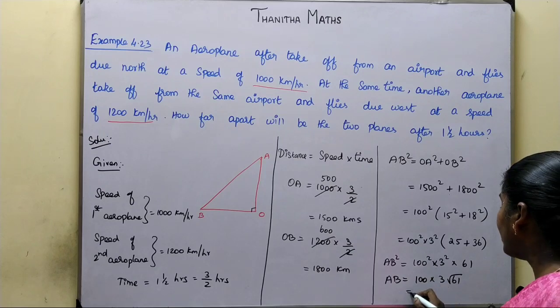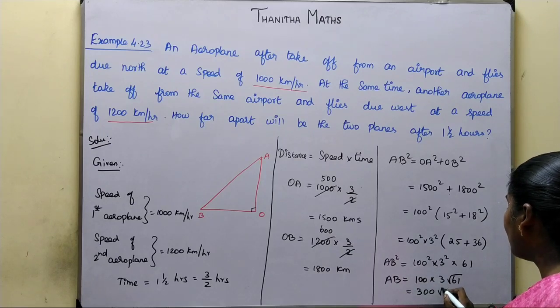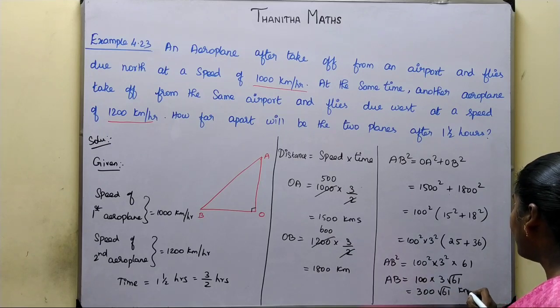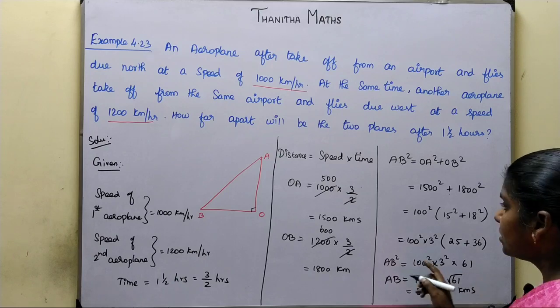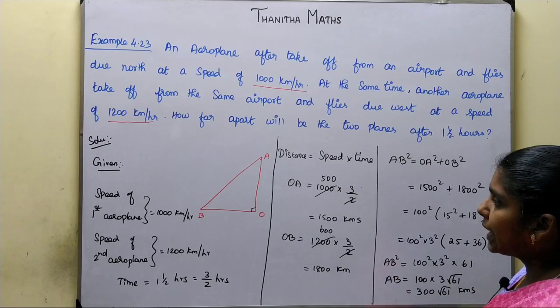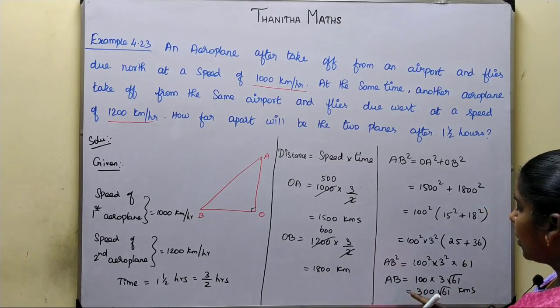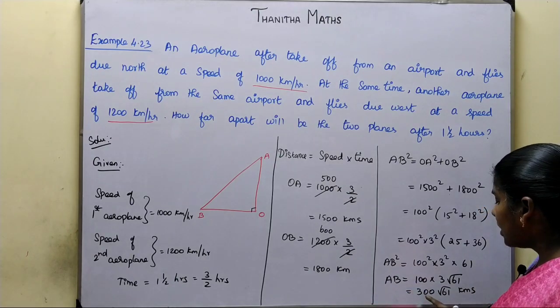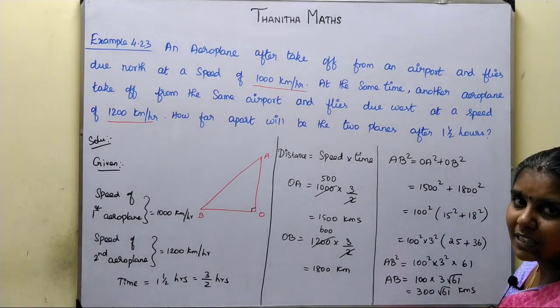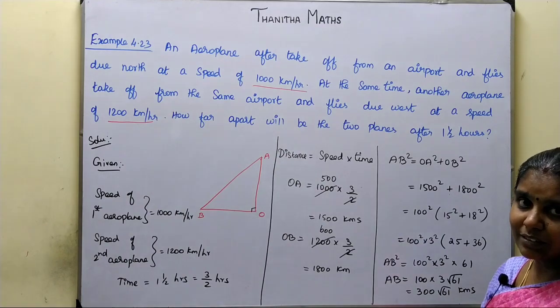So, 100 into 3 is equal to 300. Therefore AB is equal to 300 root 61 kilometers. This will be the distance between the two planes after one and a half hours.